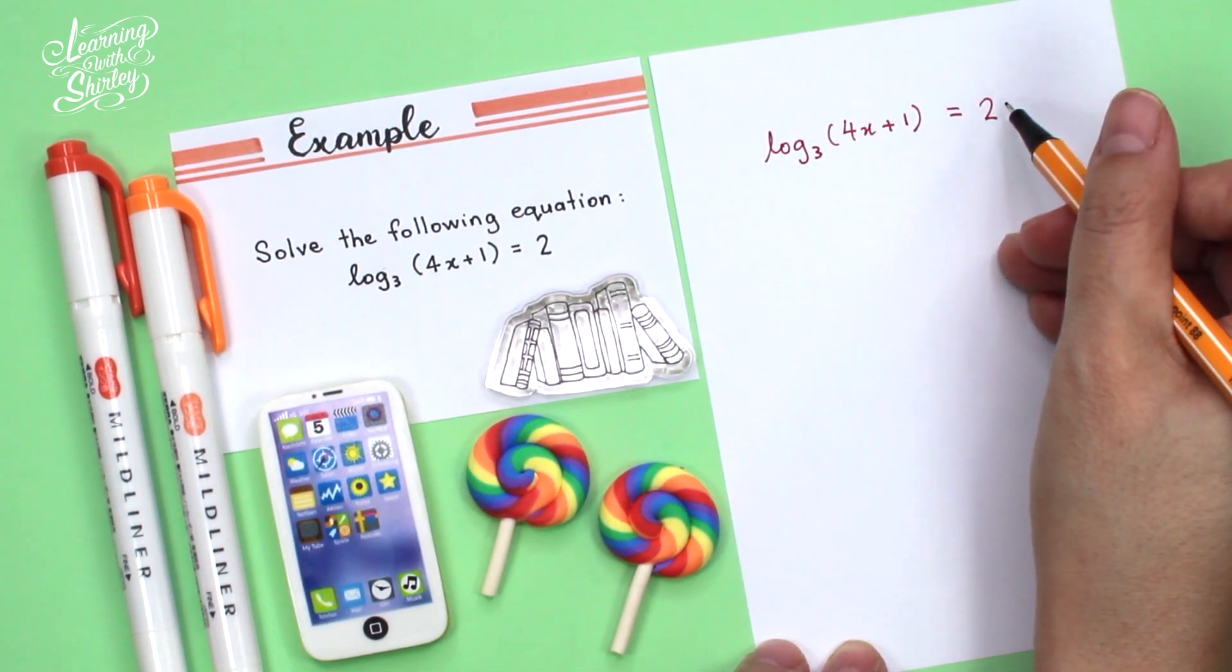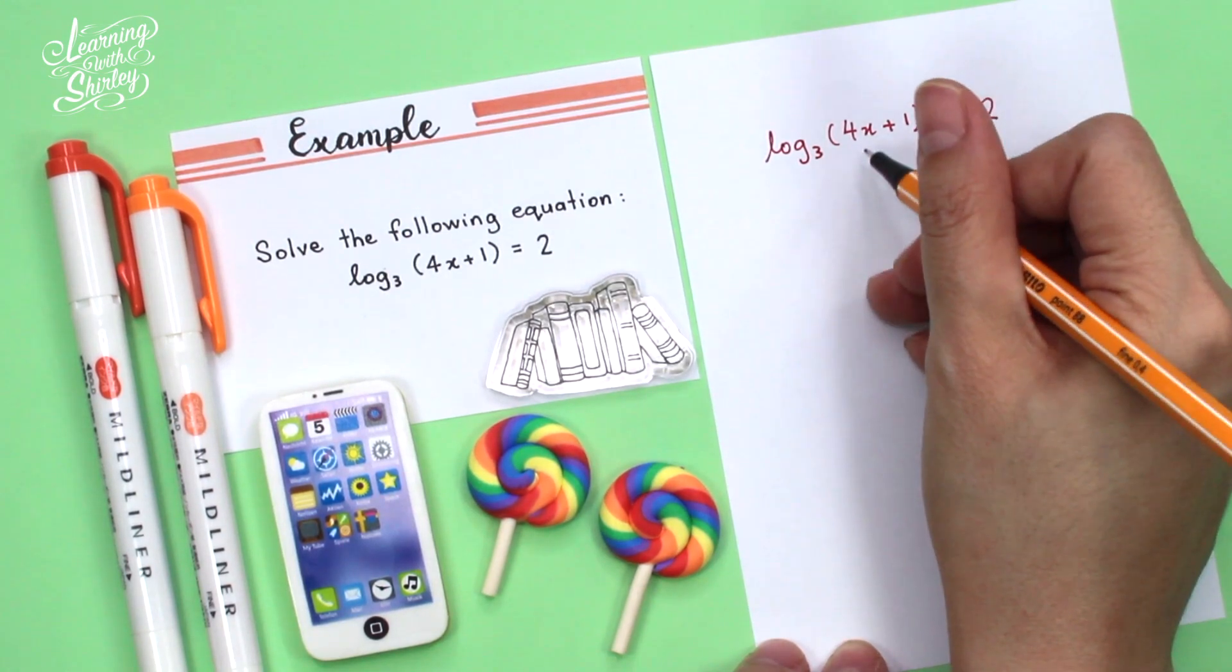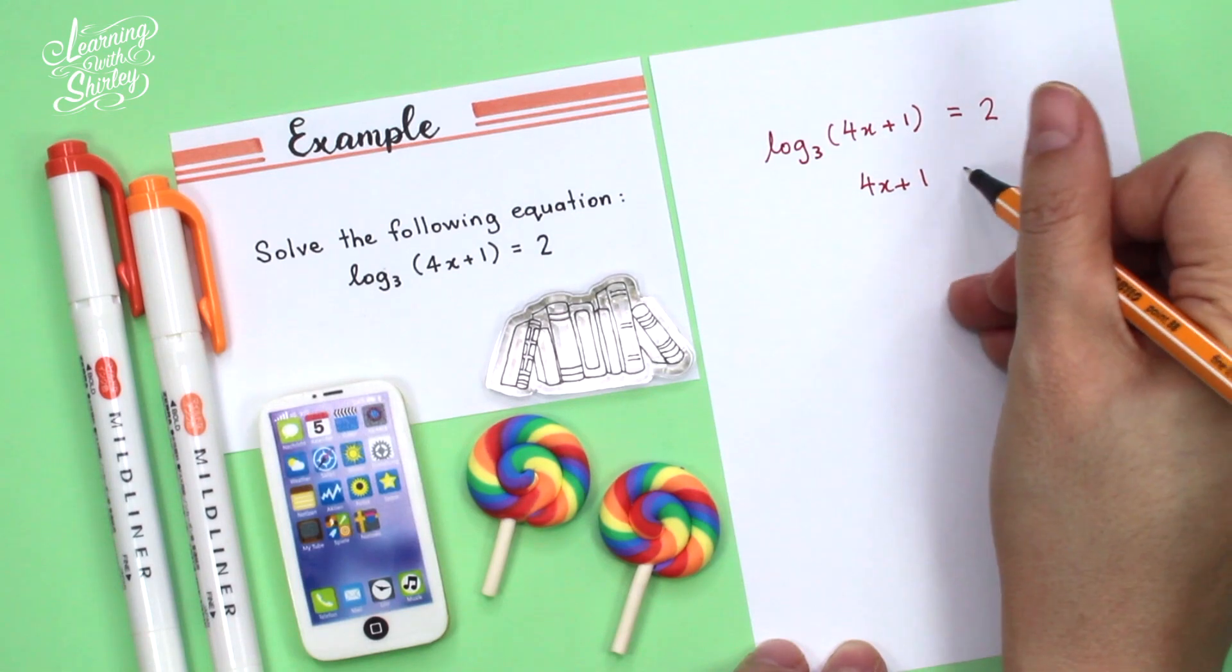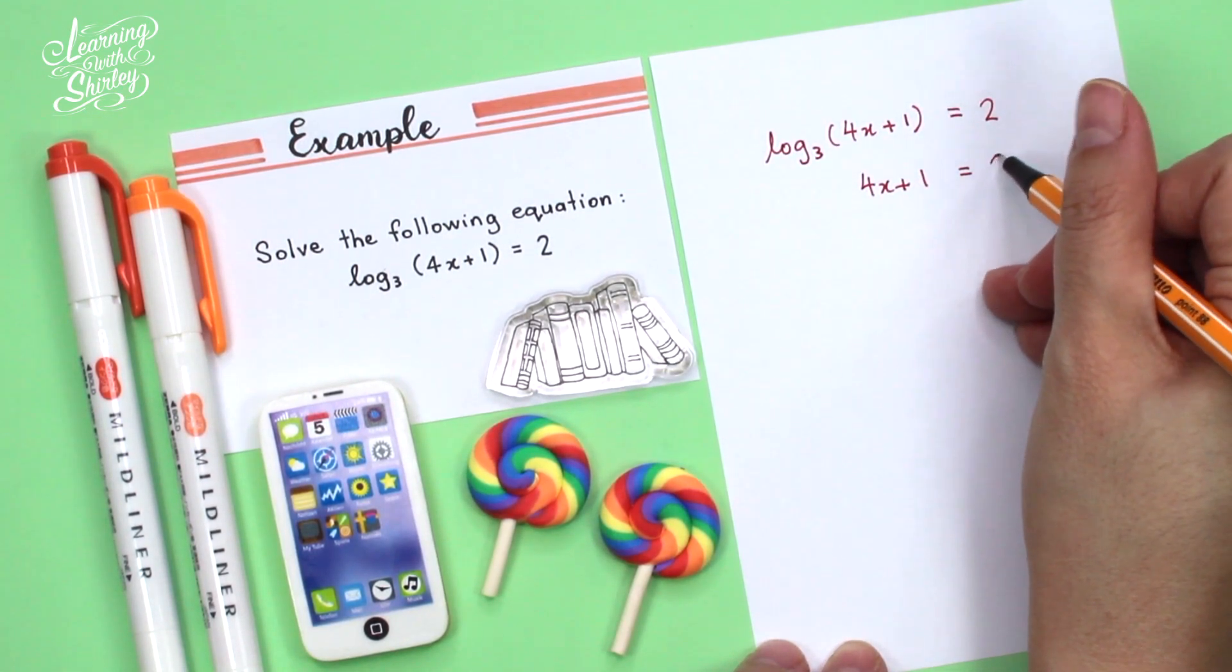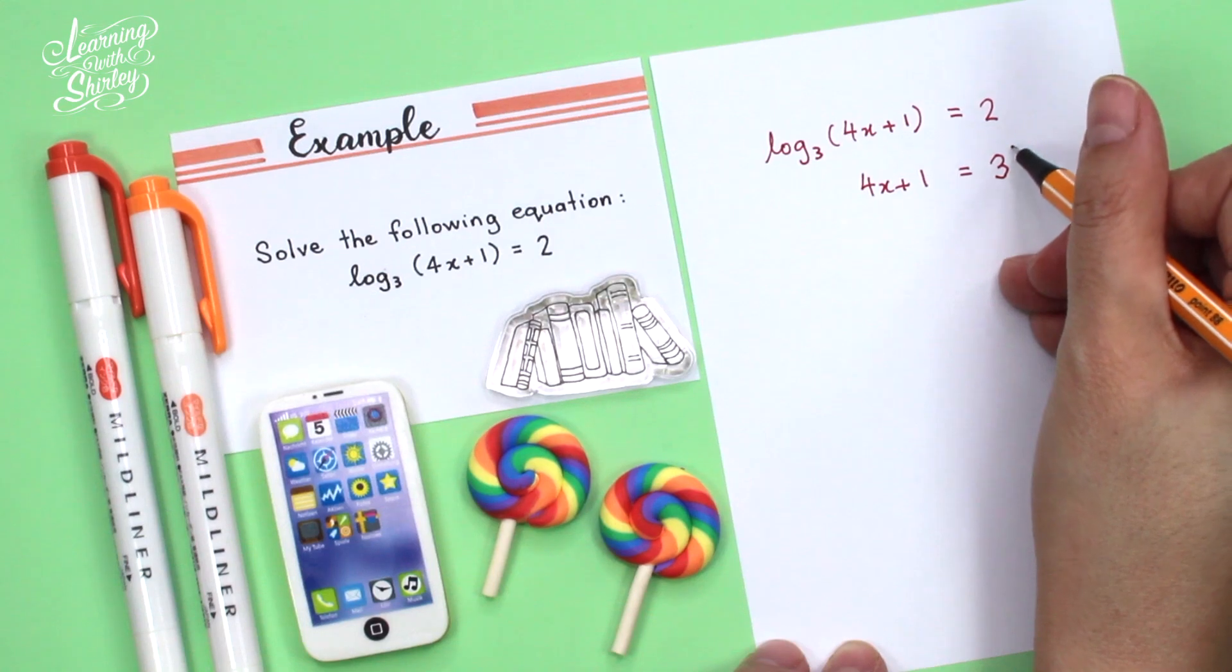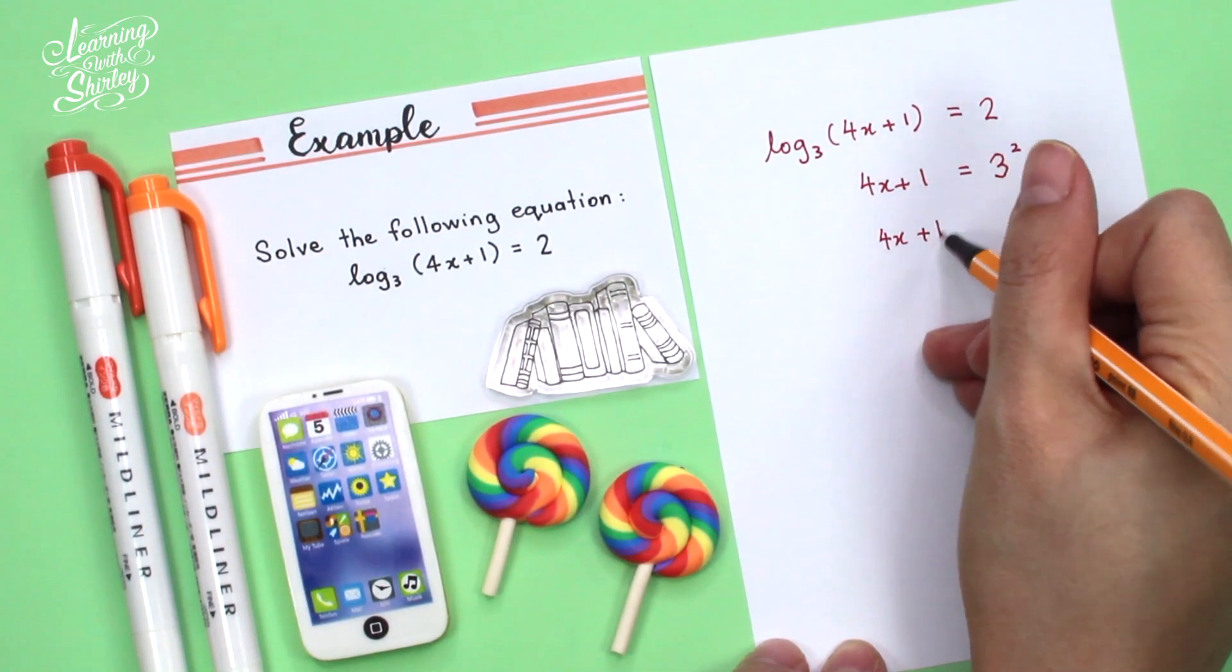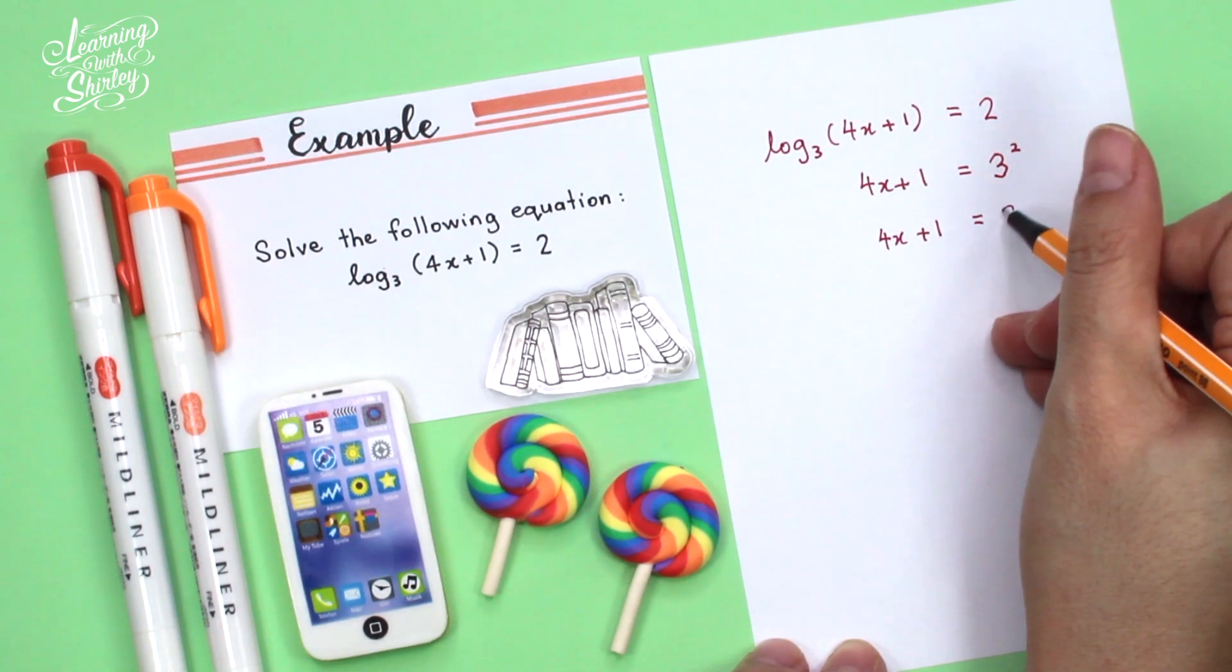So this 3, I move it to the right, it becomes the base 3. So I bring this down first, which is 4x plus 1 equals, so the 3 I move it over to the right becomes base 3 and the power is 2. So 4x plus 1 is equal to 3 square is 9.